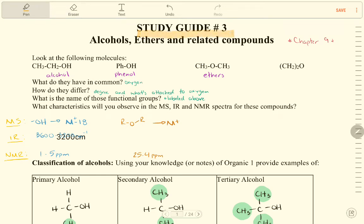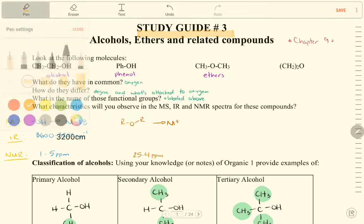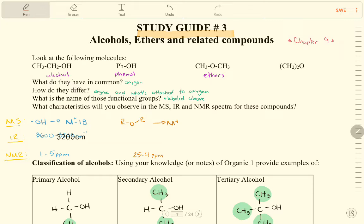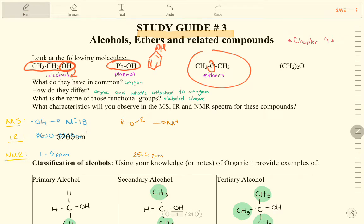I am going to start study guide 3 which is alcohols, ethers and related compounds. Let us start with some of those common molecules: CH3CH2OH where the OH is connected with a hydrocarbon chain, so it is an alcohol group. Phenol is where benzene has an OH on top. Ethers have an oxygen in between two carbons.